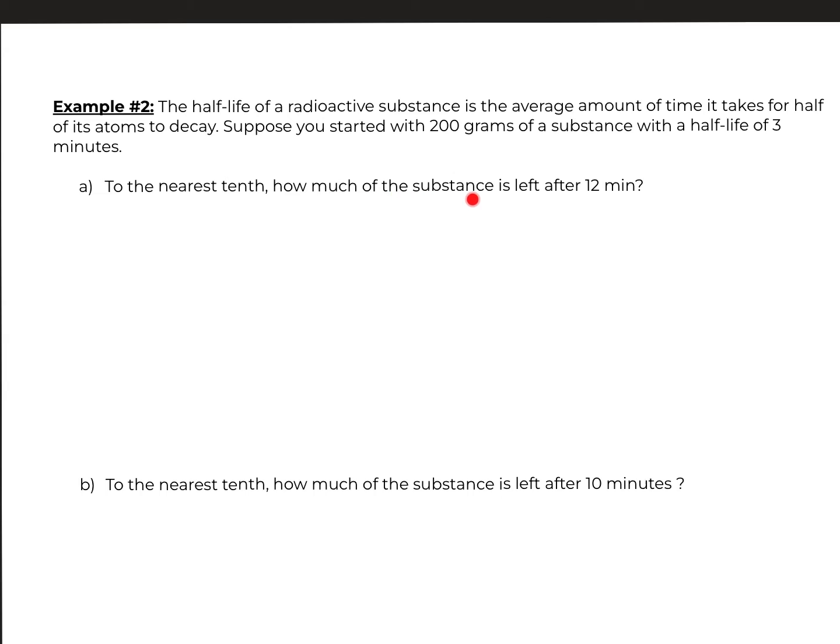To the nearest tenth, how much of the substance is left after 12 minutes? This is more or less like your science problems. So suppose you started with 200 grams. That means P is my start value. And a half-life tells you half-life of three minutes. So the three is your H.